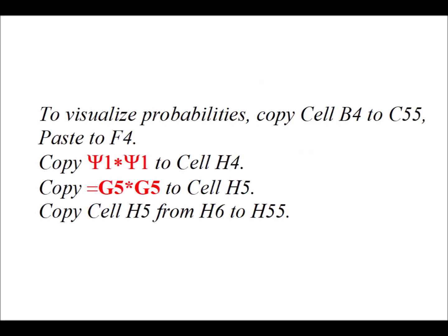To visualize the probability density, we copy cells B4 to C55 — that two-column block — and paste to F4. We label cell H4 with apostrophe psi1 star times psi1. Then we copy the formula equals G5 times G5 to cell H5, which simply multiplies the eigenfunction value by itself. We then copy cell H5 from H6 down to H55.